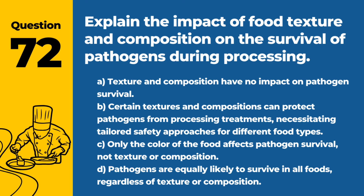Question 72. Explain the impact of food texture and composition on the survival of pathogens during processing. a. Texture and composition have no impact on pathogen survival. b. Certain textures and compositions can protect pathogens from processing treatments, necessitating tailored safety approaches for different food types. c. Only the color of the food affects pathogen survival, not texture or composition. d. Pathogens are equally likely to survive in all foods, regardless of texture or composition. Answer: b. Certain textures and compositions can protect pathogens from processing treatments, necessitating tailored safety approaches for different food types. Understanding the interaction between food properties and pathogen survival is key to effective food safety management.